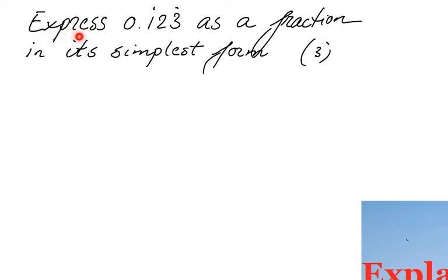The question says: express 0.123 — with dots at the top of the digits — as a fraction in its simplest form. That simplest form part is important, so at the end we have to make sure we simplify the fraction. It's worth 3 points, so we are expected to do some work for it.